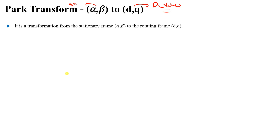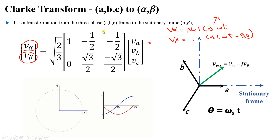Let's understand how we can do that. This is called the stationary frame and this is called the rotating frame. We call it stationary because it doesn't rotate — it is constant. It has alpha at zero angle and beta at 90 degrees; it doesn't change at all.